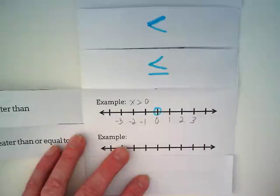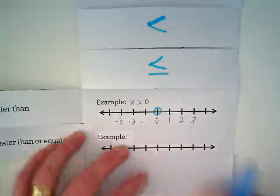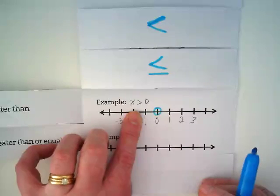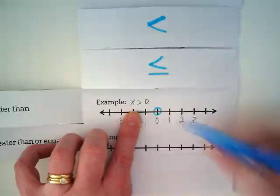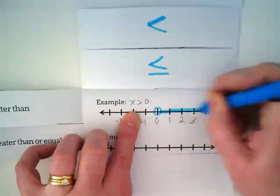Circle the 0. Do we leave it open or shade it? Open up that. And this inequality symbol tells us greater than means we're going to the. So shade your line appropriately.